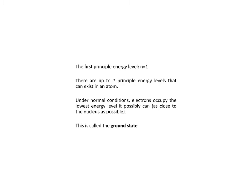Each principal energy level is given a specific number called a principal quantum number. The first principal energy level is n equals 1, and that's the one closest to the nucleus. There are 7 principal energy levels that can exist in an atom. If you look at the periodic table, there are 7 rows, and each one represents an energy level.